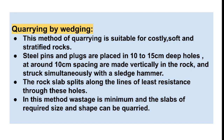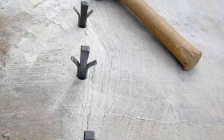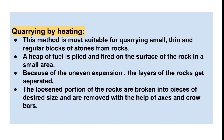As you can see in this picture, the steel pins and plugs are placed in 10 to 15 centimeter deep holes — these are the wedges — at around 10 centimeter spacing, and they are struck simultaneously. Quarrying by heating is most suitable for quarrying small, thin, and regular blocks of stones from rocks.